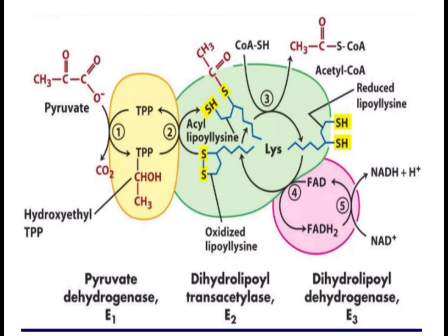The reduced lipoamide is oxidized by the third enzyme of the complex, dihydrolipoyl dehydrogenase. During this process, FAD is reduced to FADH₂. The reduced FADH₂ is then oxidized by NAD⁺, which accepts the hydrogen ions and is converted to NADH + H⁺. This NADH further enters the electron transport chain for ATP production. Thus, pyruvate is converted into acetyl-CoA.